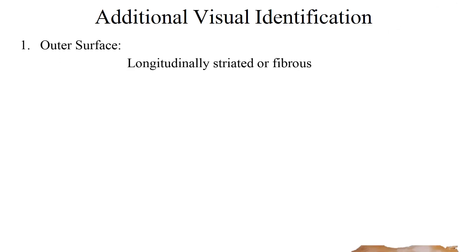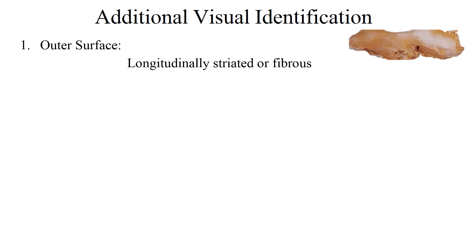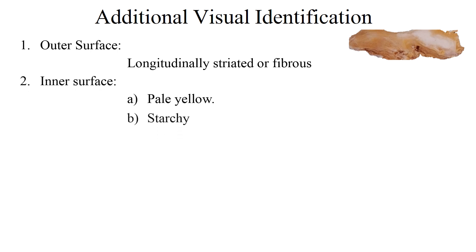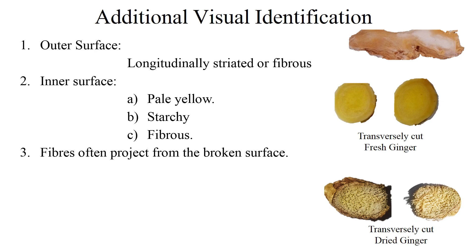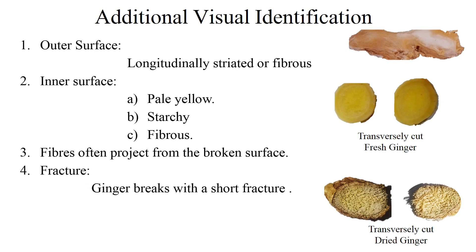Additional visual identification: the outer surface of ginger is longitudinally striated or fibrous. The inner surface is pale yellow, starchy, and fibrous. Fibers often project from the broken surface. Ginger breaks with short fracture.